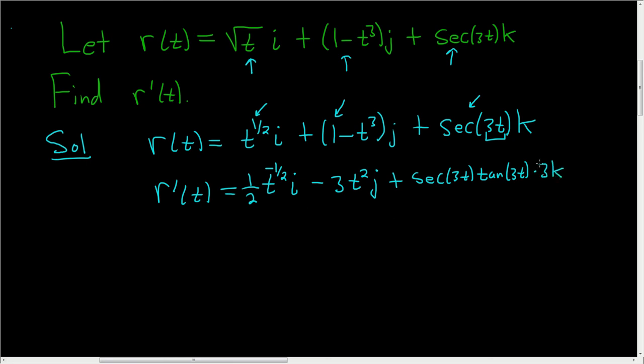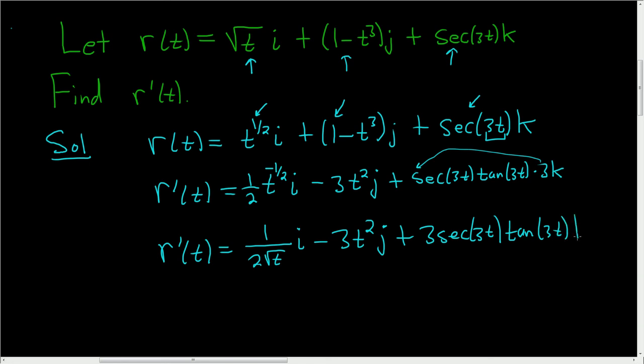The last thing to do is write the 3 out in front. So r prime of t—we can also bring this downstairs and make it positive. This is 1 over 2 square root of t, right, because it's t to the 1/2: i minus 3t squared j plus 3 secant 3t tangent 3t k.